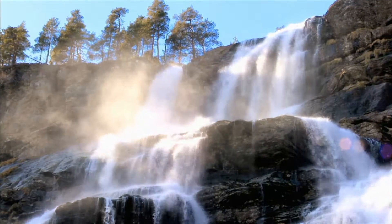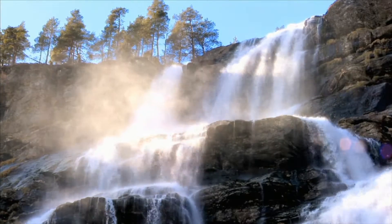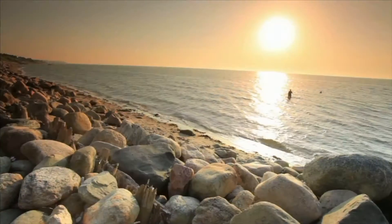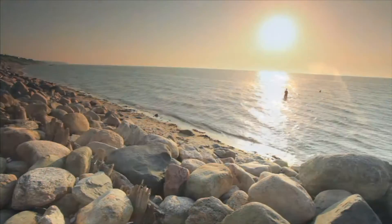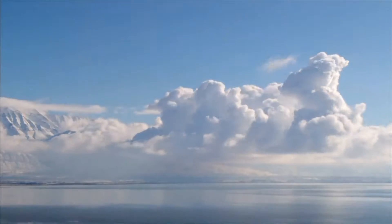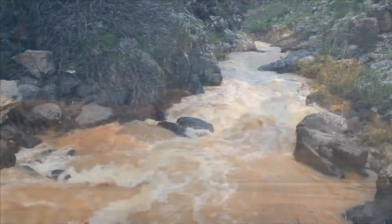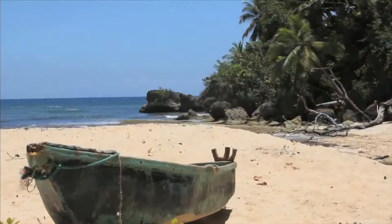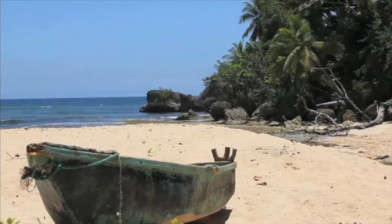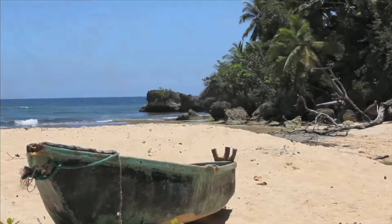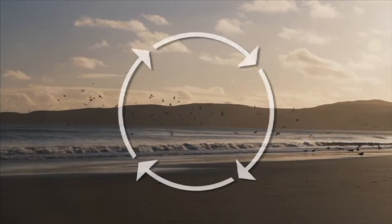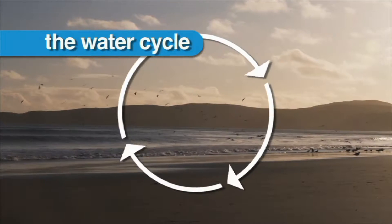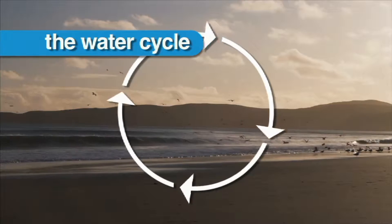Water on our planet Earth is always on the move. Water moves from the oceans, to the clouds, to the land and rivers, then back to the ocean. This process, called the water cycle, is repeated over and over again.